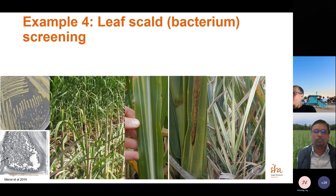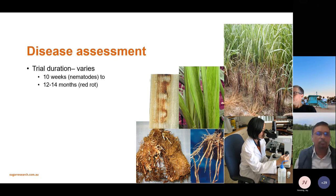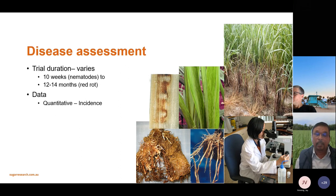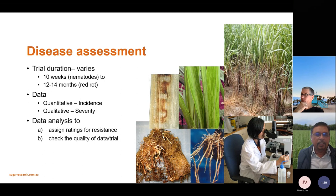Trial duration varies from 10 weeks to 12 to 14 months depending on the disease. In terms of data, we collect incidence — such as the number of smut whips — or counts for nematodes, as well as qualitative severity data. Those data are sent to a statistician who analyzes them, assigns a disease resistance rating for each clone, and checks the quality of the data.